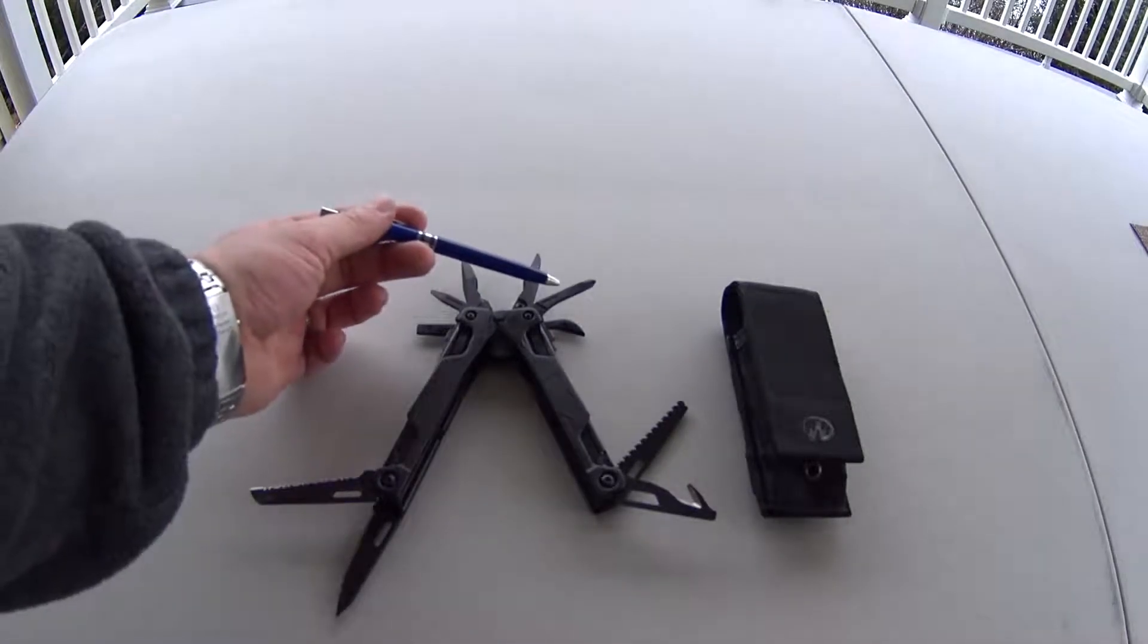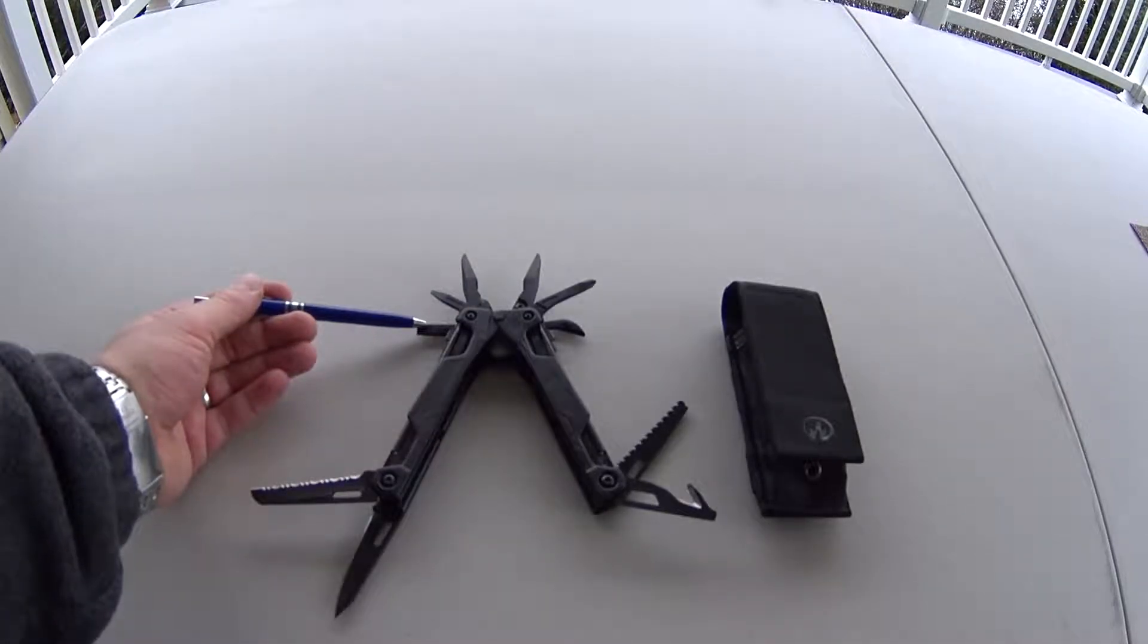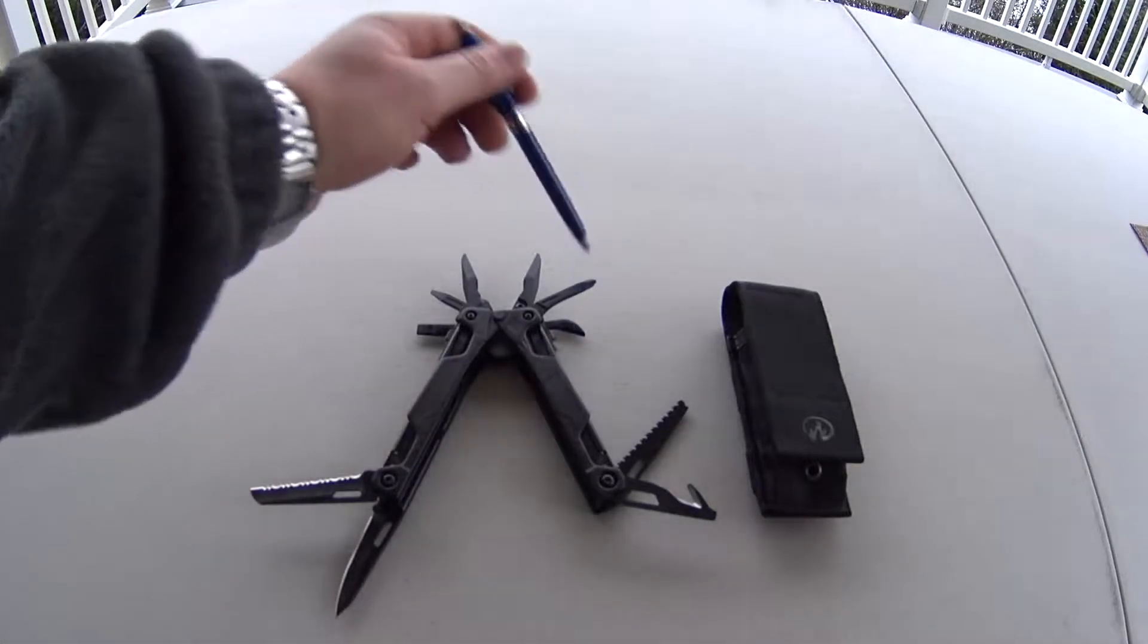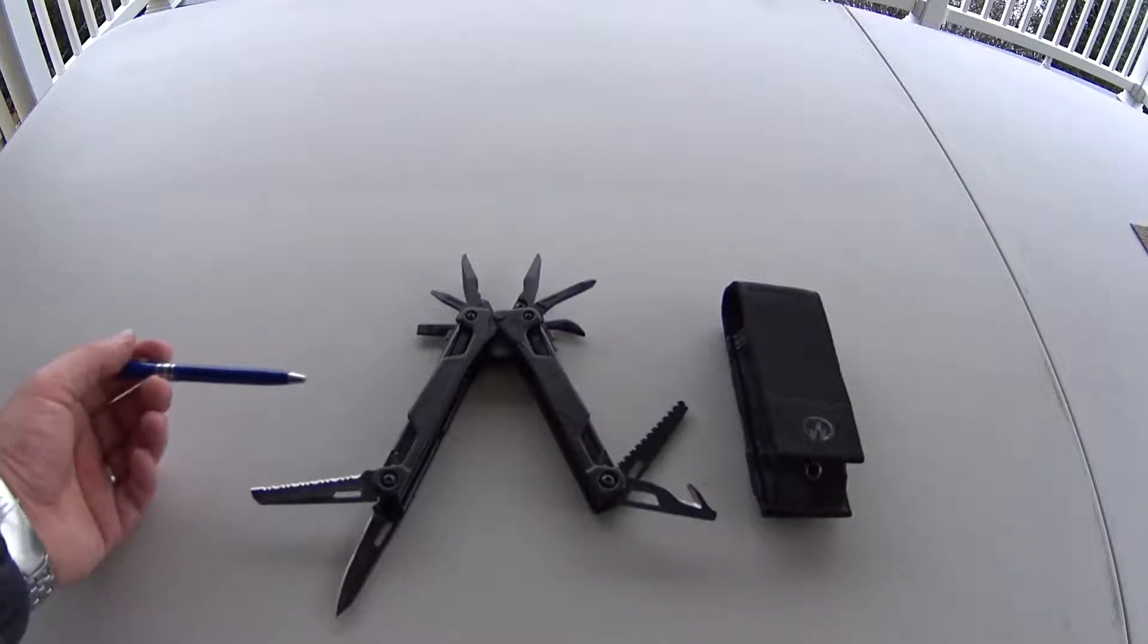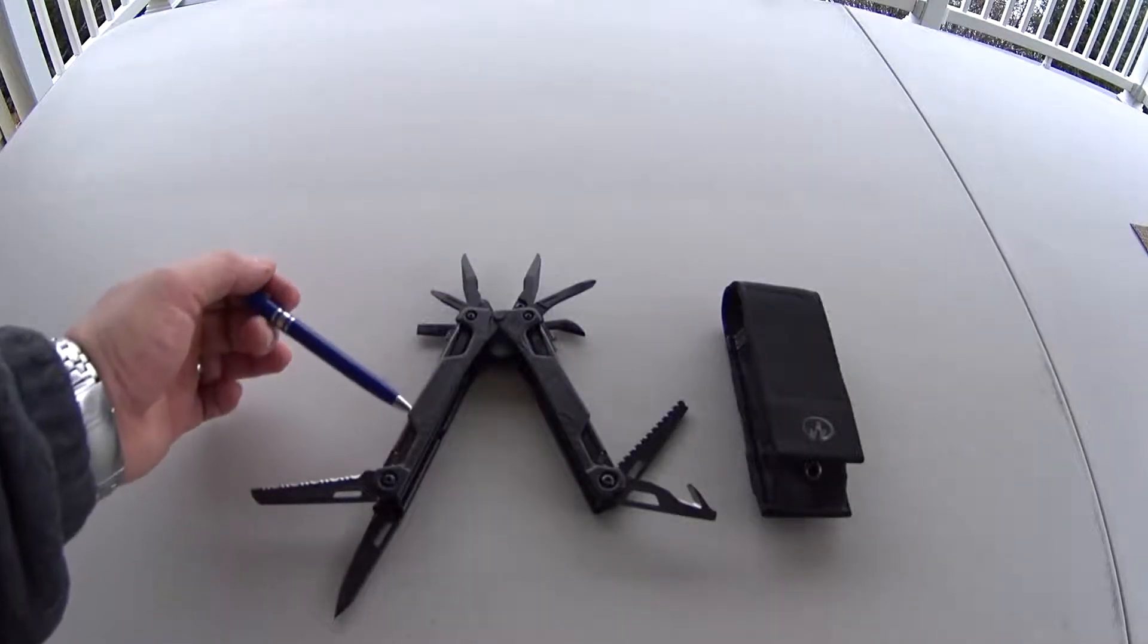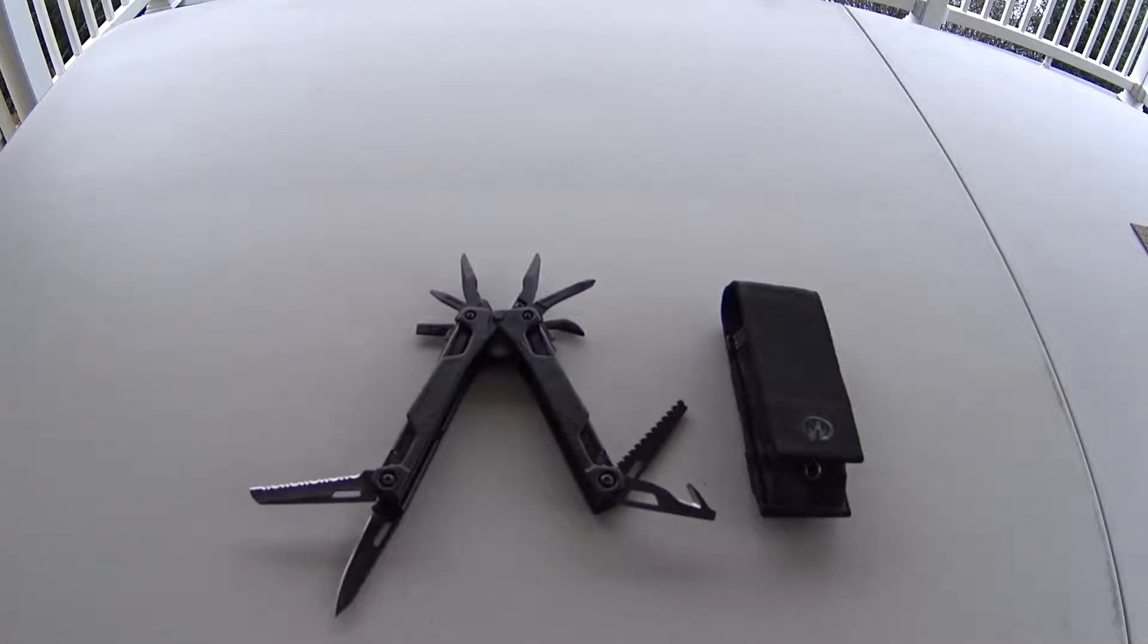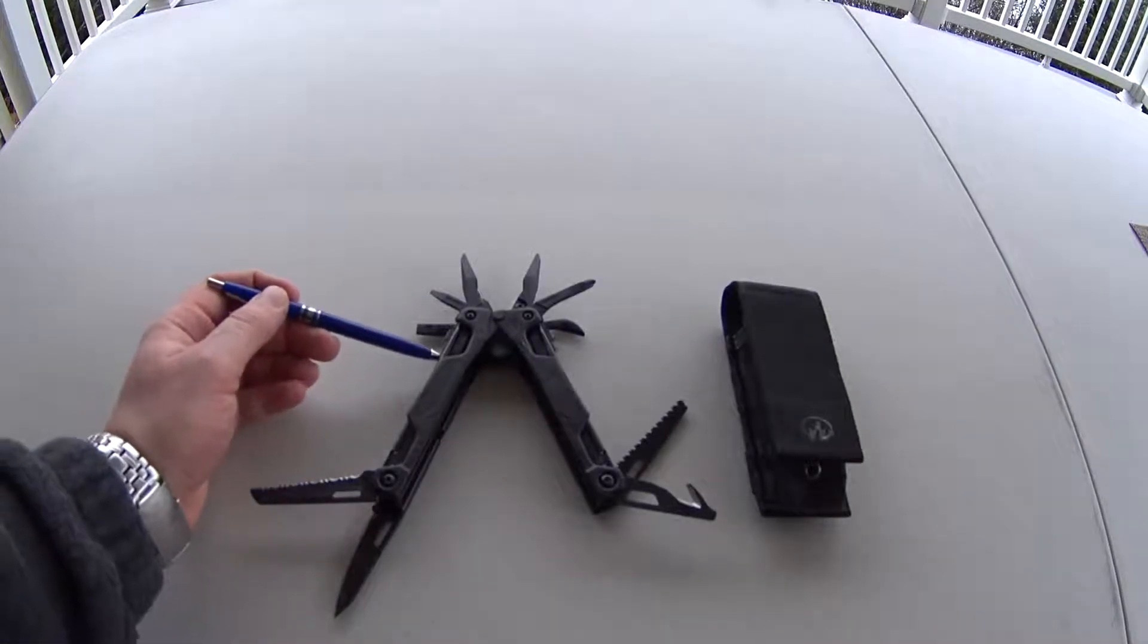It does come with a Phillips screwdriver, a small screwdriver, and you have your large screwdriver, and you have your can and bottle opener right over here. And it does have a lockout feature, so if you want to lock your pliers inside the tool, that way they don't slide out. It does come with a little screw head that screws in right on the side of the tool right here.